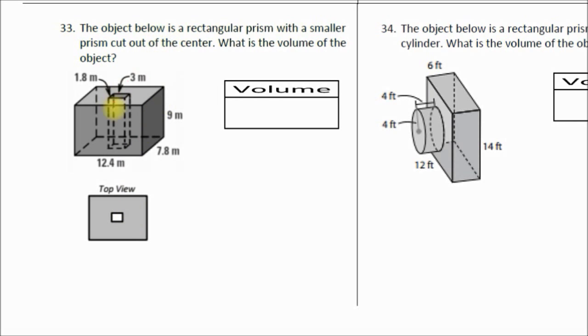So the strategy to find the volume of this shape is to find the volume of the bigger rectangular prism, the whole thing, and then find the volume of the smaller rectangular prism and subtract it from the bigger one to get our final volume. Let's work this out.